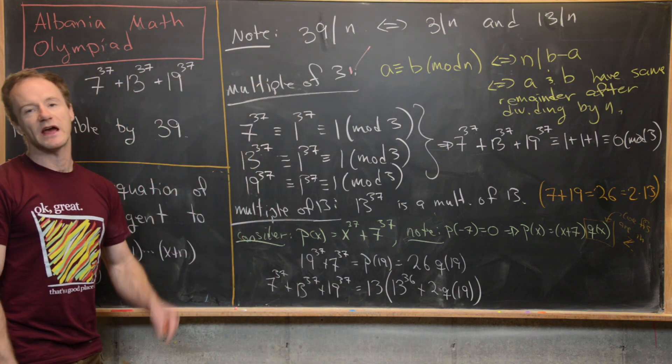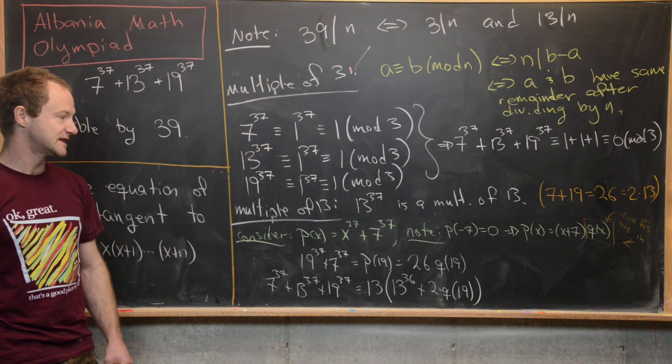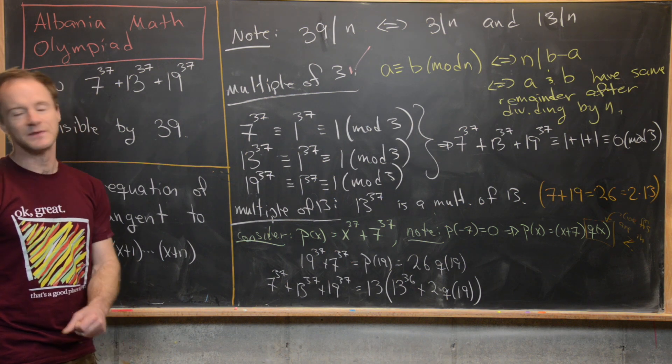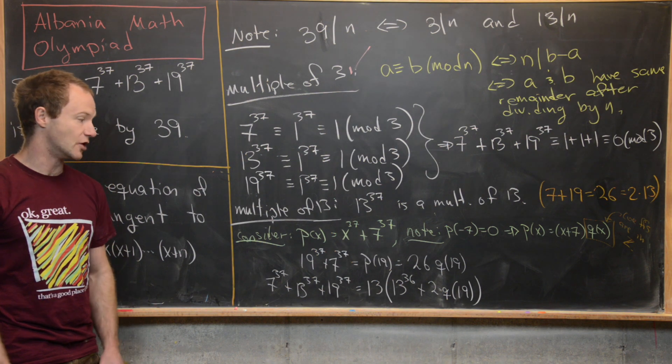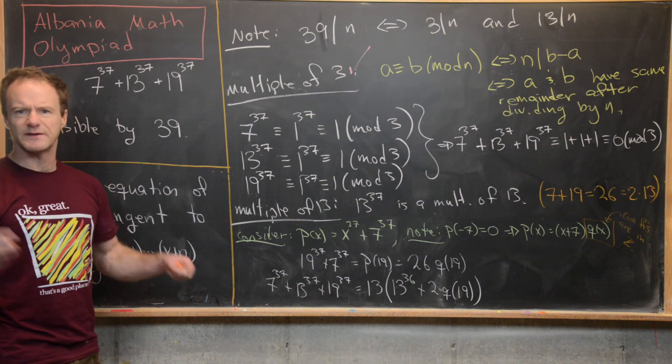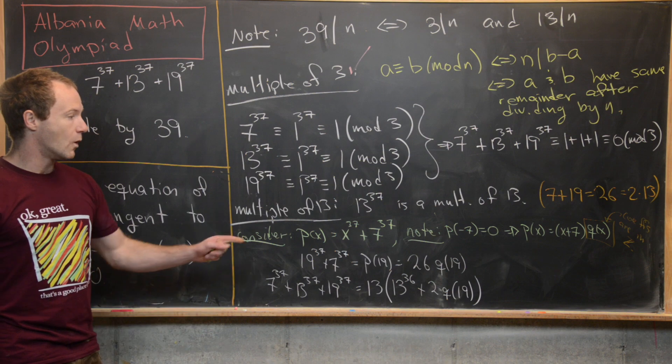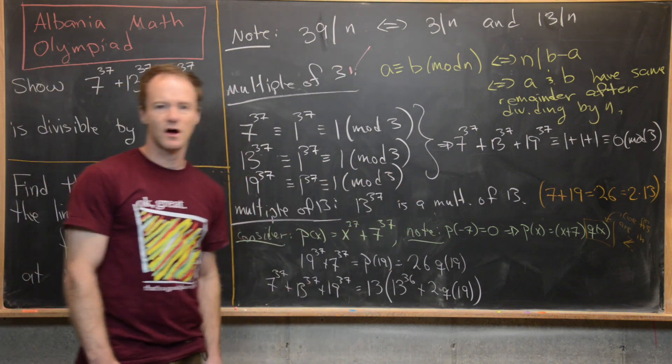And again, we have two choices here, we can explicitly write that polynomial down. That's not super hard to do. It's an alternating sum of things involving some binomial coefficients. Maybe if someone wants to write that down in the comments, that would be great.